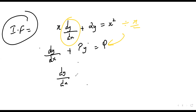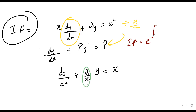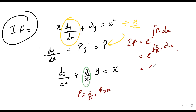After dividing by x, we get dy/dx + (2/x)y = x. So P = 2/x and Q = x. The integrating factor is e^(∫P dx) = e^(∫2/x dx) = e^(2 log x) = e^(log x²) = x². Since e^(log of anything) equals that thing, the integrating factor is x².